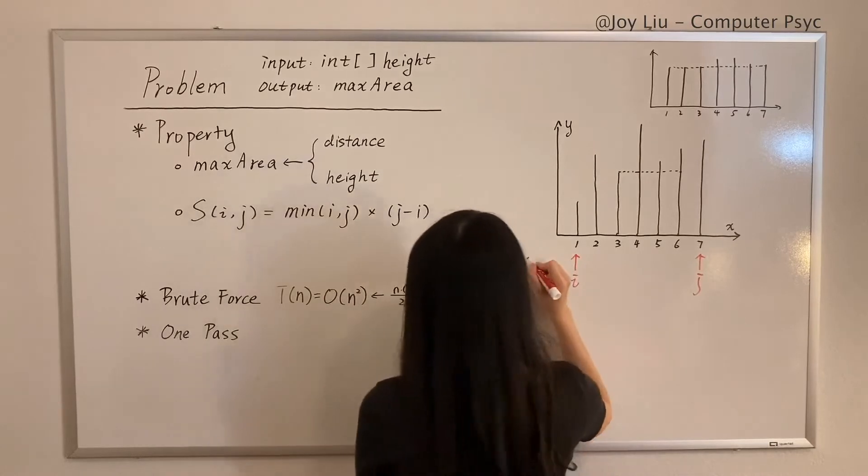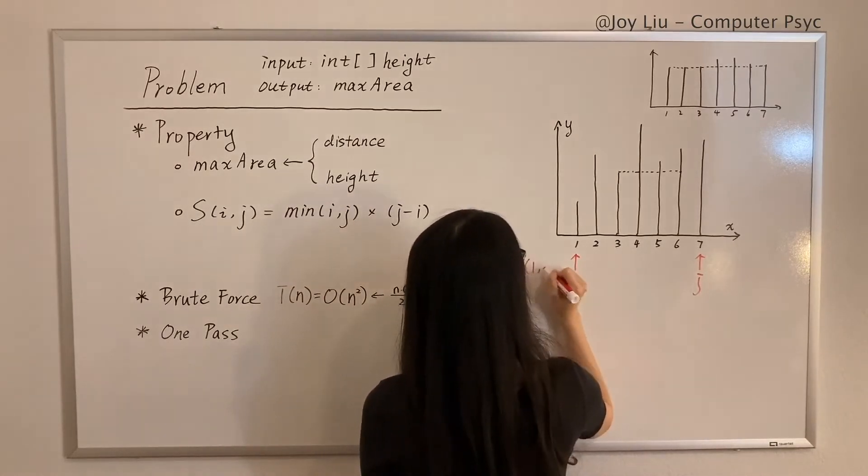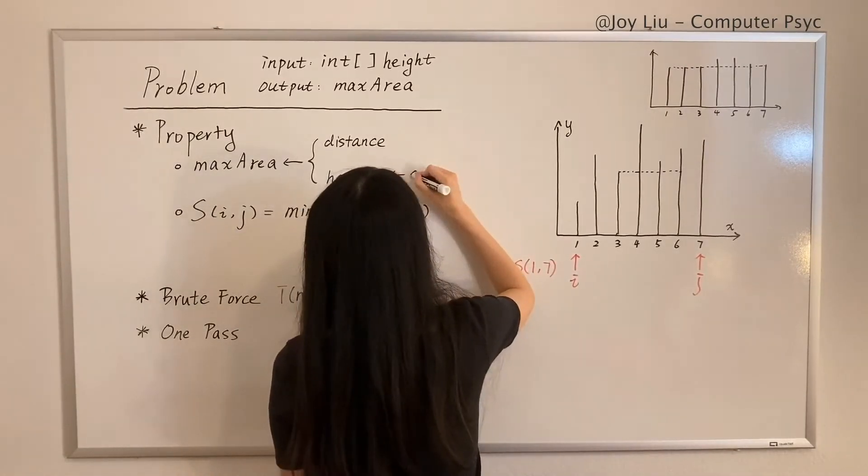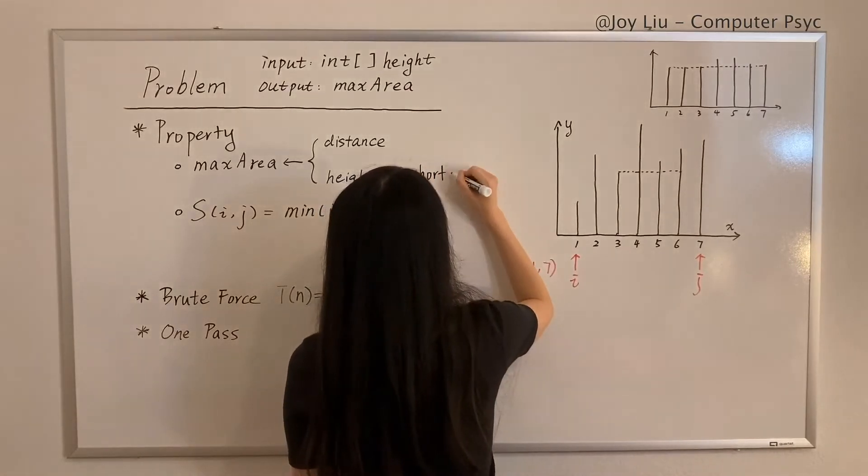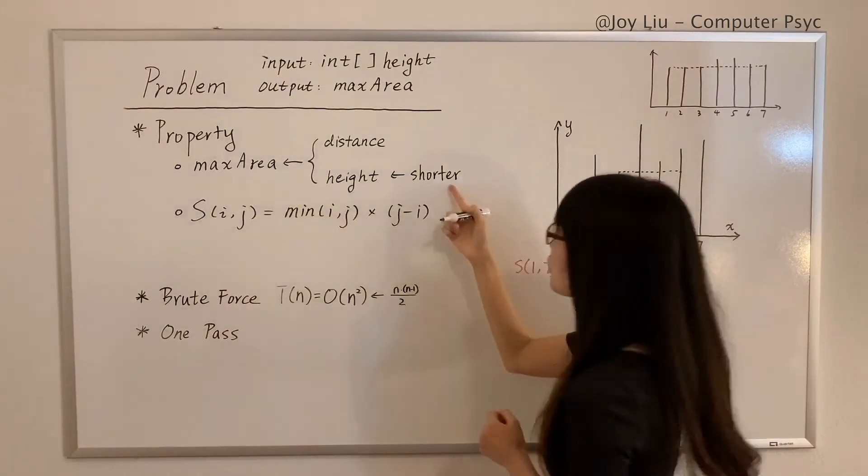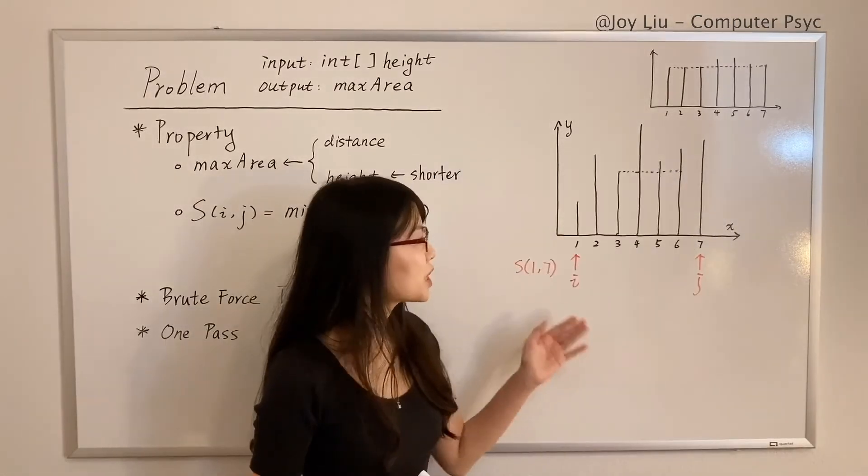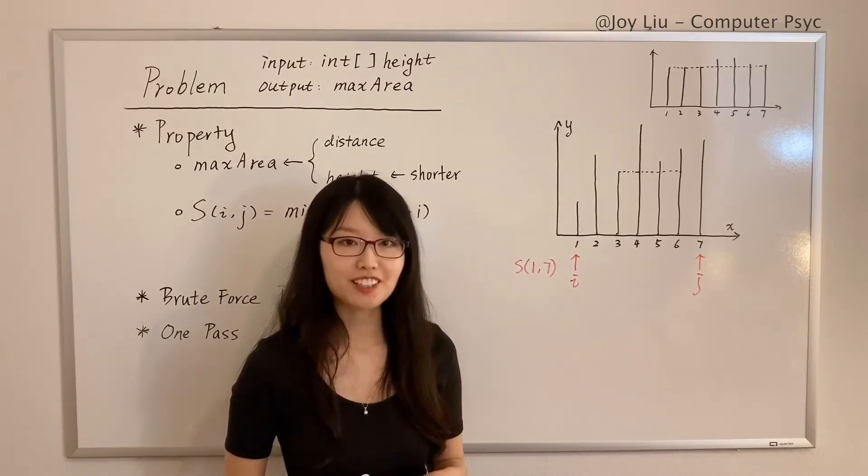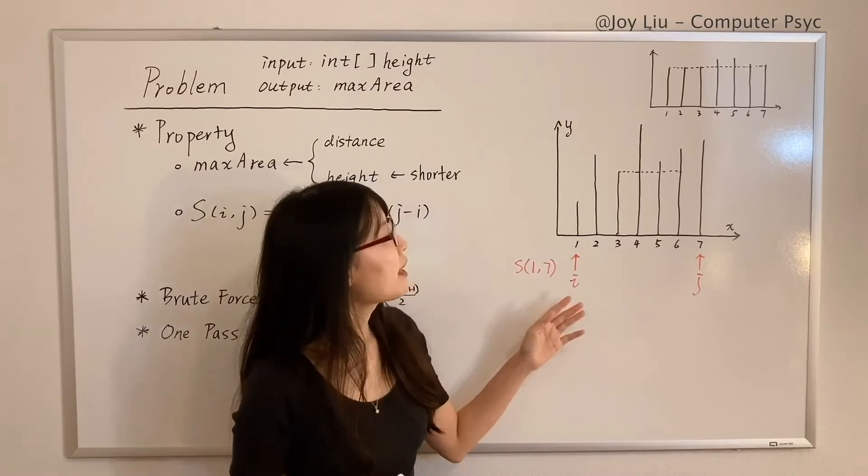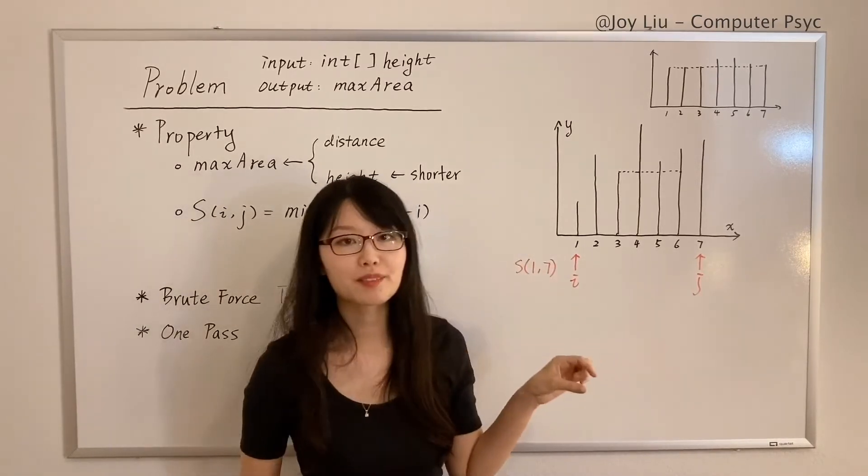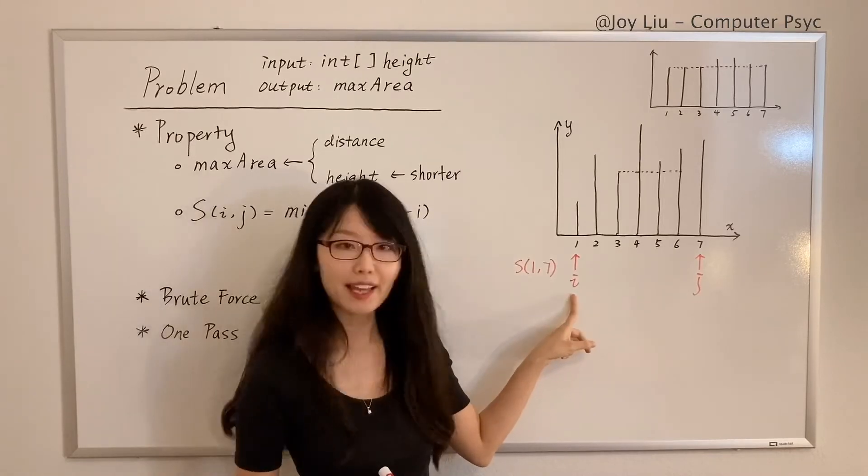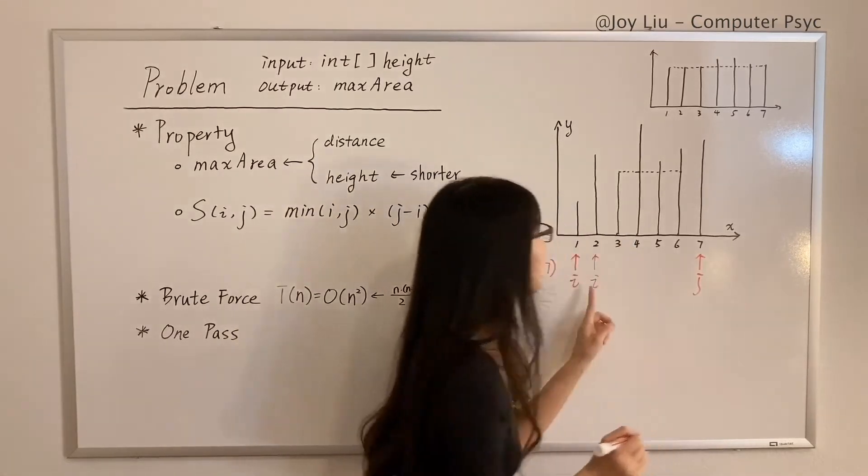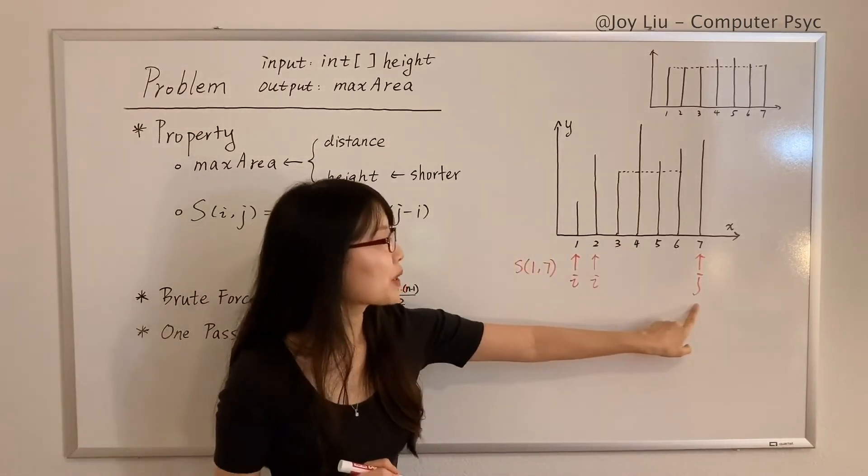Then we calculate the container of (i,j), which is S(1,7). Okay, so here I missed—let me put a note: the shorter line contributes to the height. Which pointer to move and to what direction? Here comes a very important strategy: we choose the pointer that is pointing to the shorter line. For example, in this problem, it's i, and we move i to the next one.